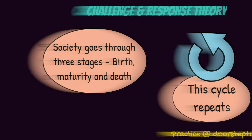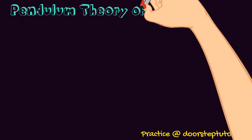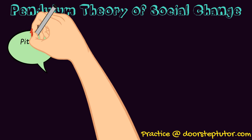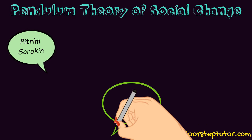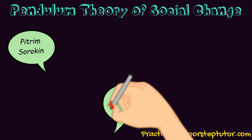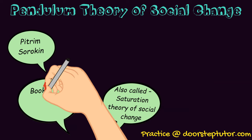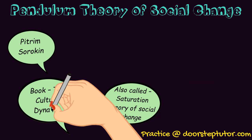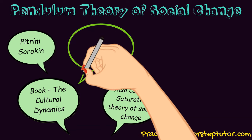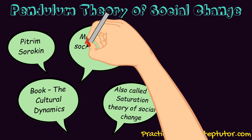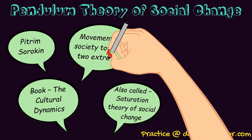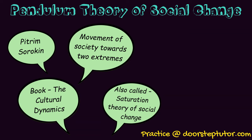The next theory is given by Pitrim Sorokin. It is called the Pendulum Theory of Social Change, or the Saturation Theory of Social Change. In his book 'Cultural Dynamics,' he talked about this kind of social change where there is a movement of society towards two extremes. Just imagine a pendulum — it will first go to its extreme left, come back to the center, then move to its extreme right and come back to the center, and this keeps on repeating. He studied this in the history of Roman society.